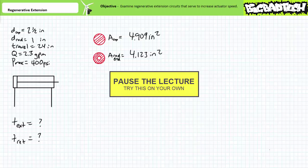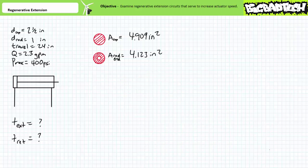If you're tracking, you should have obtained the following values. First, let's perform some area and volume calculations since they're necessary initial steps. Given these dimensions, the cylinder has a cap end functional area of approximately 4.909 square inches. The rod end has a functional area of approximately 4.123 square inches. Note the cap end area is a full circle and the rod end is a ring-like annular area equal to the area of the cap minus the area of the rod. Note the terms: rod end versus rod — do not confuse the two.